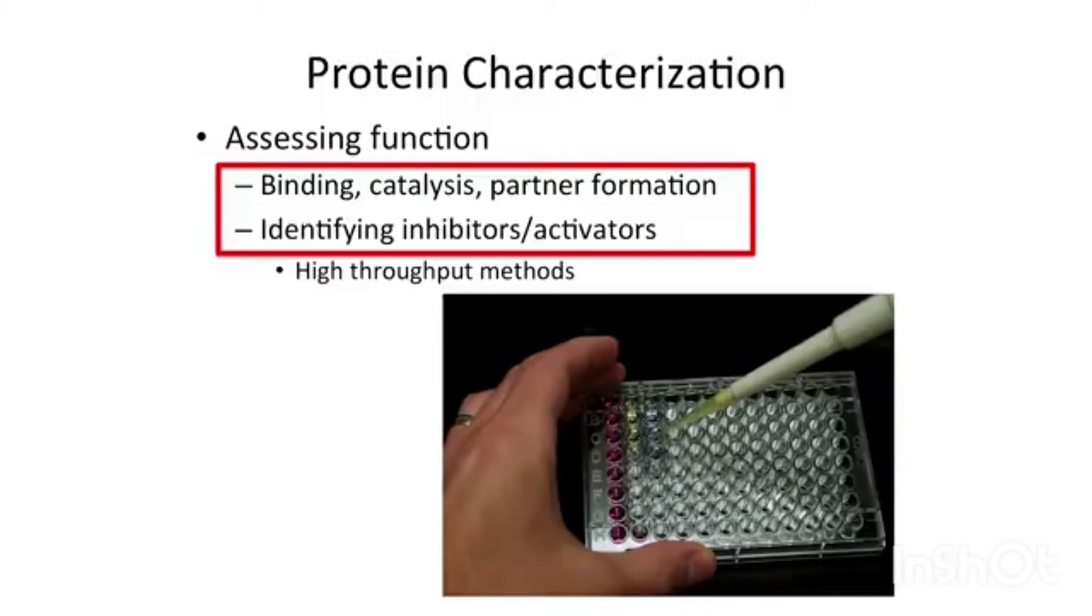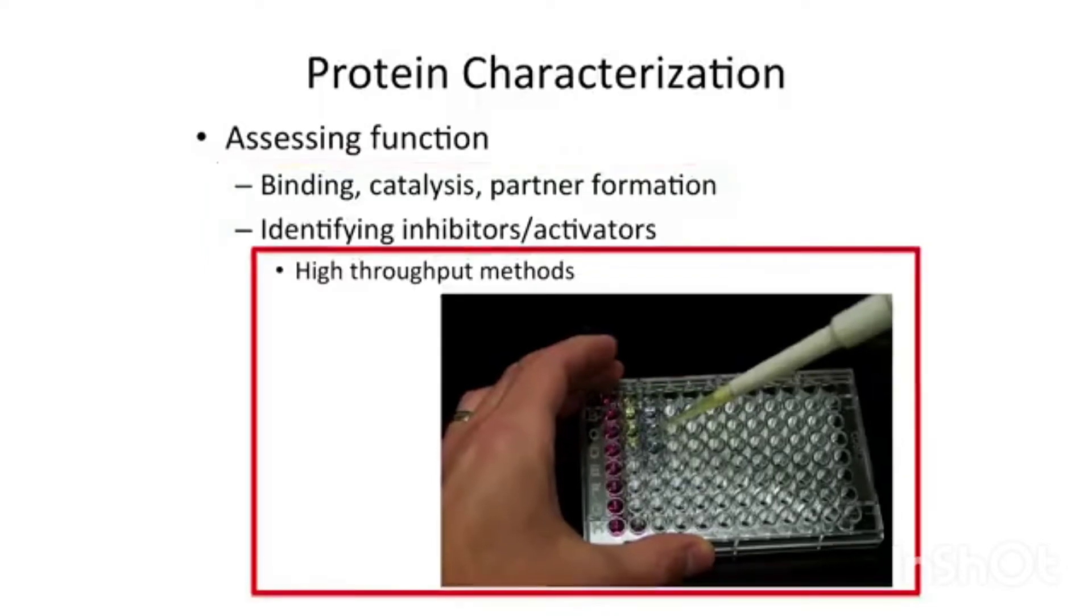High-throughput methods where you can use, for example, 96-well plates or 1096-well plates and carry out different reactions in each of those wells and then screen through those spectrophotometrically. There are many ways today to use very high-throughput. You don't have to do these one test tube at a time to figure out what function a protein carries out.